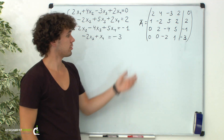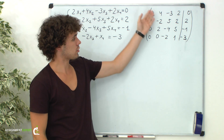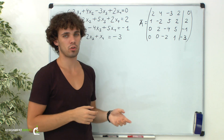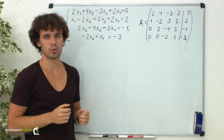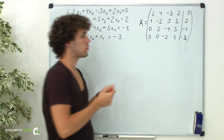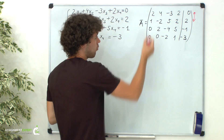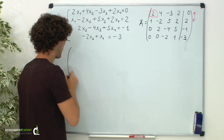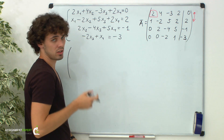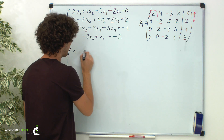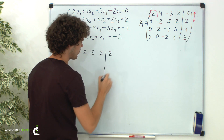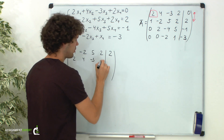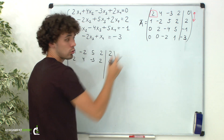As we know, we intend to represent the matrix in a triangular form, which means we must get 1s on the main diagonal and 0s below it. For that we can swap rows of the matrix, we can add or subtract them, or divide and multiply them by real non-zero numbers. Let's swap the first two rows so that we have 1 on the main diagonal. The second row now becomes the first: 1, negative 2, 5, 2, 2. And the first row becomes the second: 2, 4, negative 3, 2, 0.